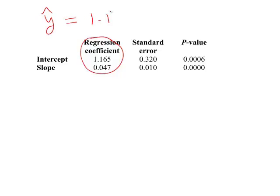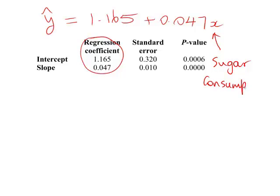Y-hat will be 1.165 plus 0.047 times x. X is the value of the explanatory variable, in this case the sugar consumption, and the y is the value of our response, in this case the number of decayed, missing and filled teeth at age 12. So we have our regression equation, but what does it mean?